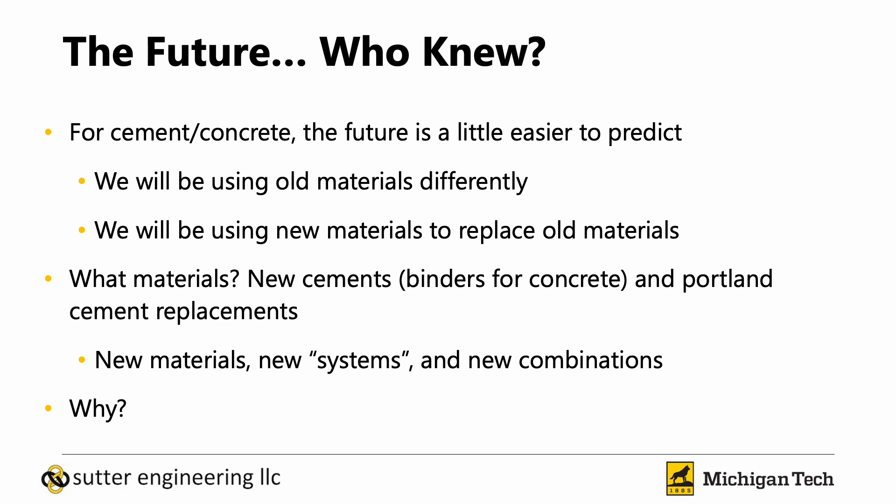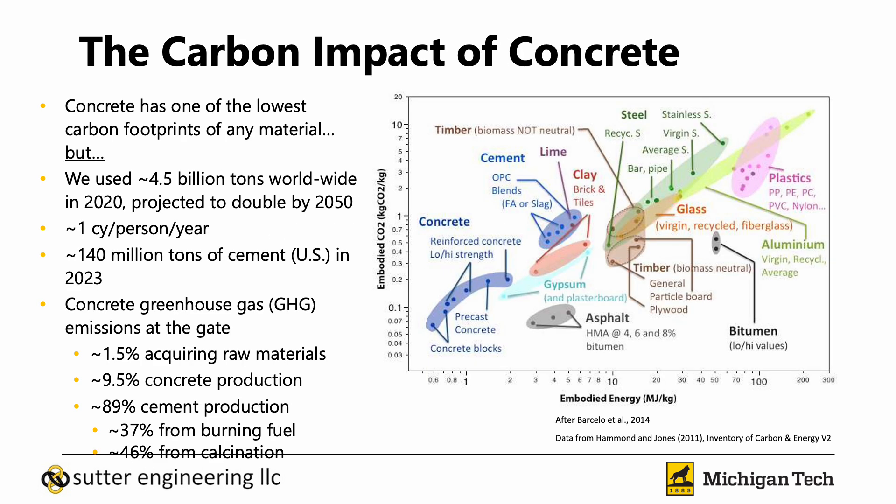In the case of cement and concrete, the future is a little bit easier to predict. First, I think we'll be using the same materials we're using now, just using them differently. Second, we'll be using new materials to replace some of those old materials. When we talk about materials, we're talking about cements, binders for concrete, replacements for Portland cement, and supplementary cementitious materials. We also need to understand how we're going to use those materials in new systems.